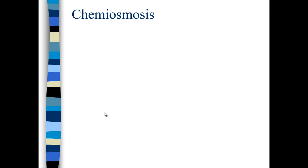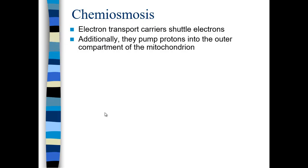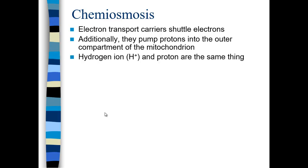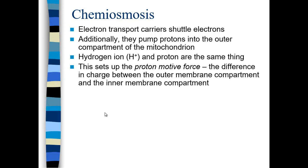The process by which hydrogen flows through ATP synthase we call chemiosmosis. The electron transport carriers shuttle electrons, providing energy for the chain. When they have energy, they pump the protons or H+ into the outer compartment of the mitochondrion, or the periplasm in prokaryotic cells. Hydrogen ion and proton are the same thing — just think H+. This sets up a proton motive force: protons achieve a higher concentration outside the membrane than inside, creating a gradient and a difference in charge between compartments.